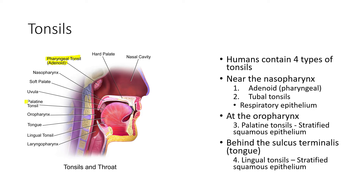At the oropharynx, we have palatine tonsils, which are stratified squamous epithelium. And behind the sulcus terminalis, which is behind the tongue, we have the lingual tonsil, which is also stratified squamous epithelium. The tonsils you characteristically think of when someone has a throat infection are the palatine tonsils, which are near the uvula — the little ball in the back of your throat.